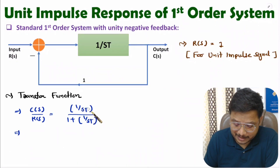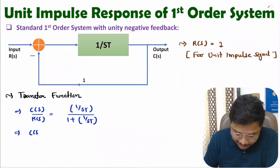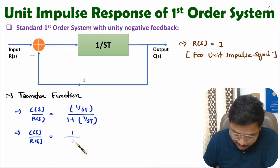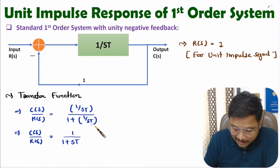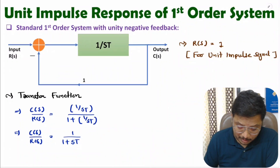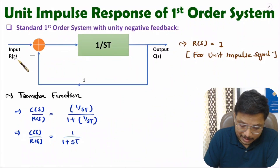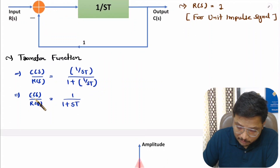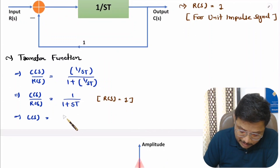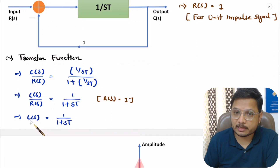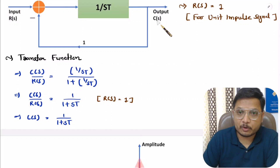Simplifying, the sT term gets cancelled from numerator and denominator, so C(s)/R(s) equals 1 divided by 1 plus sT. Since R(s) equals 1 for a unit impulse signal, the output C(s) equals 1 divided by 1 plus sT.